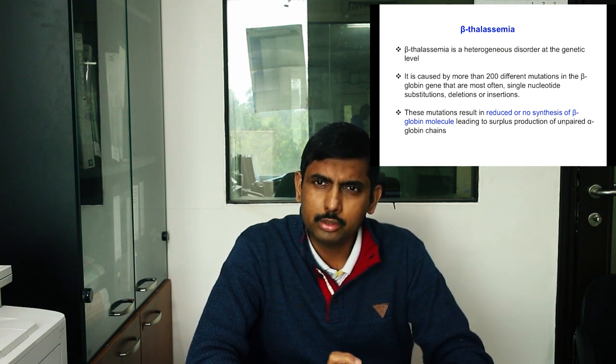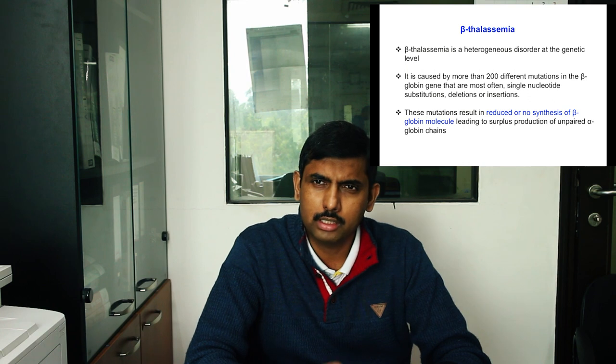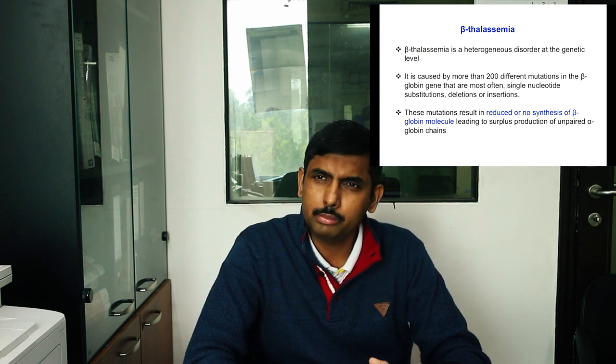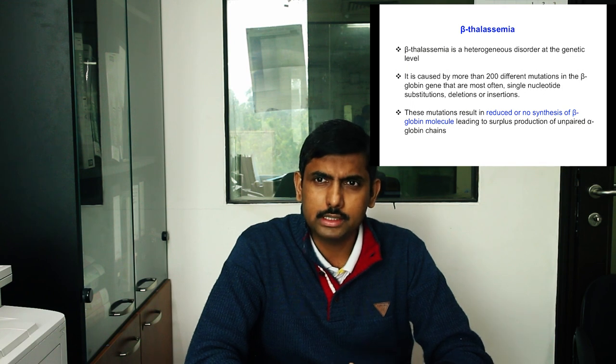The next disease is beta-thalassemia. Unlike sickle cell anemia, in beta-thalassemia the mutation is in the same gene, the beta-globin gene, but the mutation is spread across the gene. There are some deletions, insertions, and in the introns also there are some deletions or insertions. It is a heterogeneous disorder at the genetic level, caused by more than 200 different mutations in the beta-globin gene — mostly deletions, insertions or base pair substitutions. These mutations result in reduced or no synthesis of the beta-globin molecule, leading to the surplus production of alpha-globin, so there will be an imbalance between the alpha and beta-globin chains.